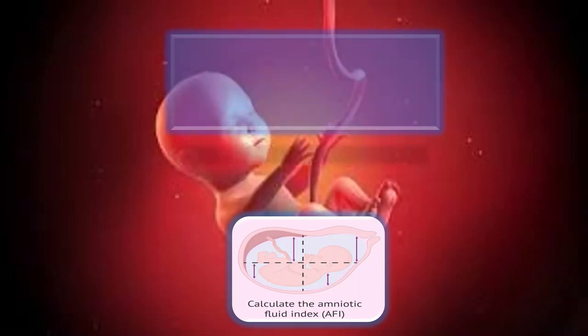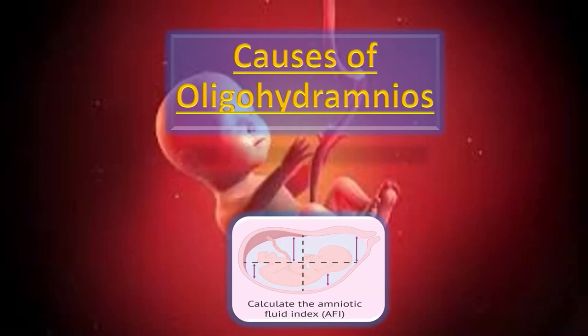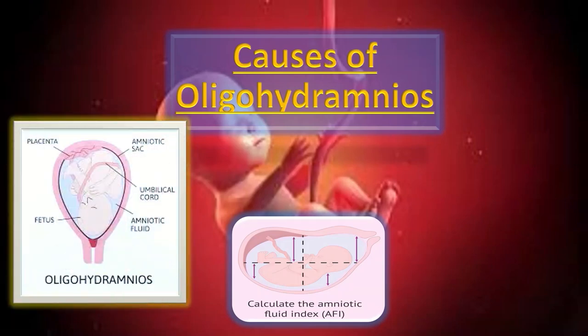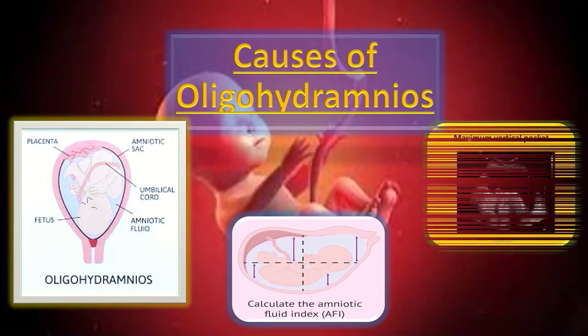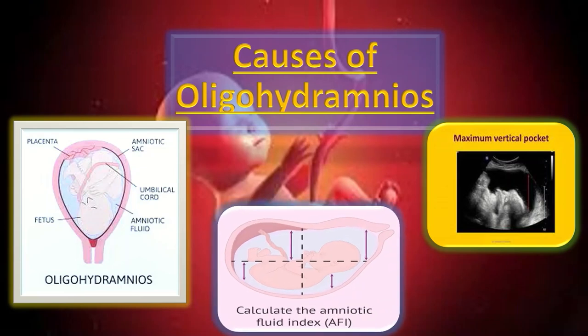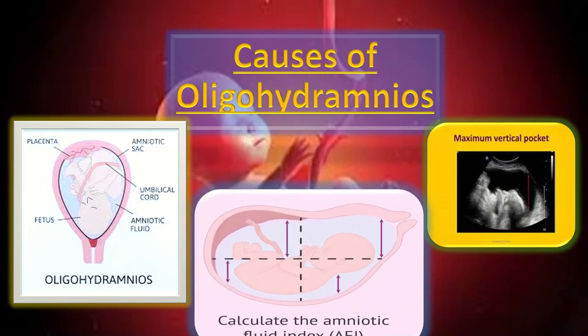Today we will talk about the causes of oligohydramnios. Oligohydramnios is a condition in which there is a decreased amount of amniotic fluid around the baby. Quantitatively on ultrasound, oligohydramnios may be defined as the maximum vertical pool of less than 2 cm, or an amniotic fluid index of less than 5 cm, or an AFI below the 5th centile for gestational age.